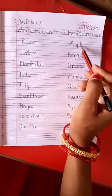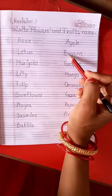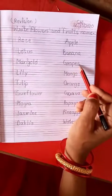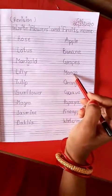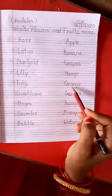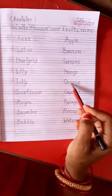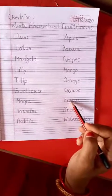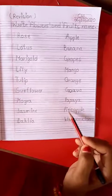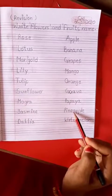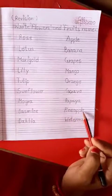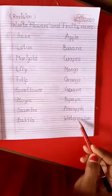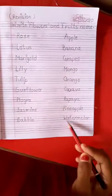A, P, P, L, E. Apple. B, A, N, A, N, A. Banana. G, R, A, P, E, S. Grapes. M, A, N, G, O. Mango. O, R, A, N, G, E. Orange. G, U, A, B, A. Guava. P, A, P, A, Y, A. Papaya. P, I, N, E, A, P, P, L, E. Pineapple. W, A, T, E, R, M, E, L, O, N. Watermelon. Learn.